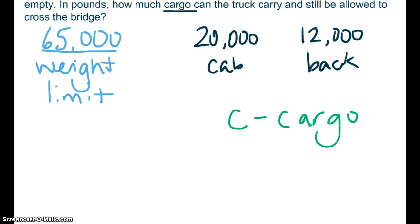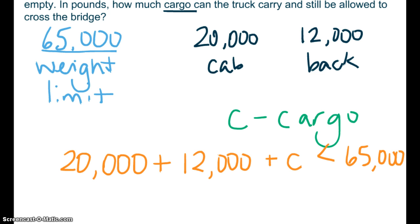So you may have done something like this. We know that we're definitely going to have 20,000 pounds for the cab plus 12,000 pounds for the trailer plus C pounds for the cargo. And we know that cannot equal more than 65,000 pounds.